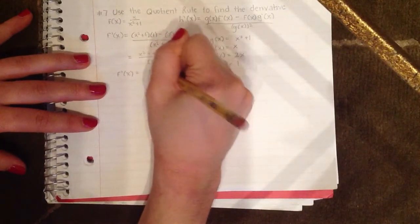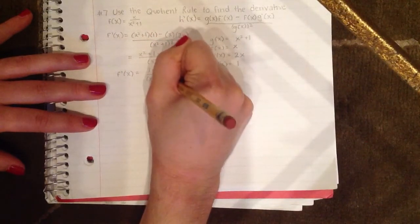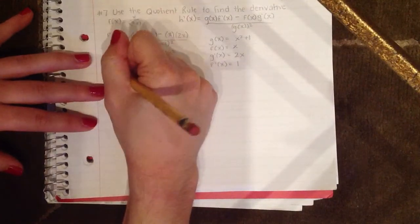So I will have 1 - x² all over (x² + 1)². And this is my final answer. Thank you.